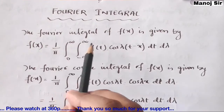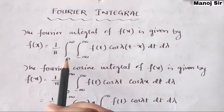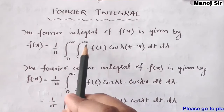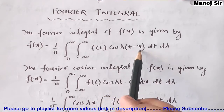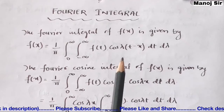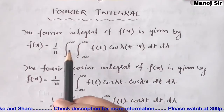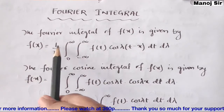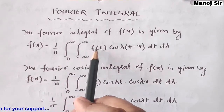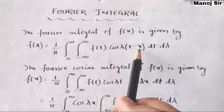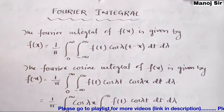The Fourier Integral of a function f(x) is given by: f(x) = (1/π) ∫₀^∞ ∫₋∞^∞ f(t) cos[λ(t − x)] dt dλ. Here you need to remember that the limit from minus infinity to plus infinity is for t, and the limit from zero to infinity is for λ.